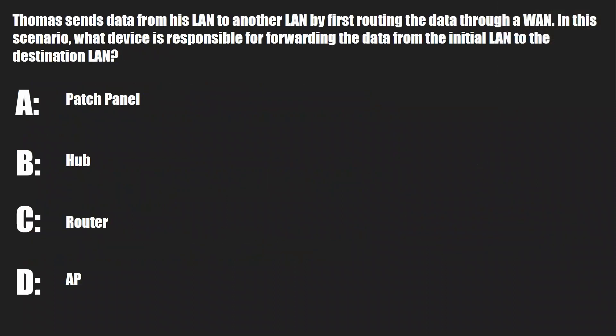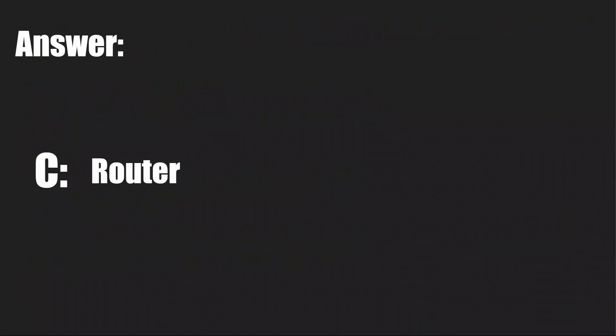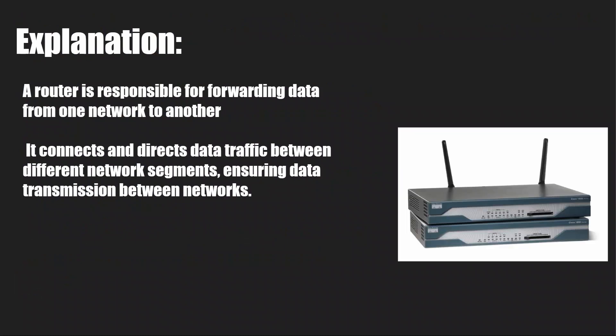The next question is: Thomas sends data from his LAN to another LAN by first routing the data through a WAN. In this scenario, what device is responsible for forwarding the data from the initial LAN to the destination LAN? Is it A, a patch panel; B, a hub; C, a router; or D, an AP? And the answer is C, a router. A router routes. If you're moving data from a LAN to another LAN, a router is going to be what sends the data on its route.